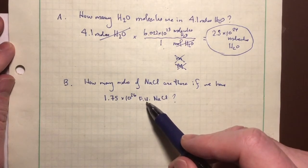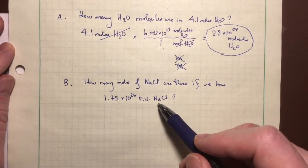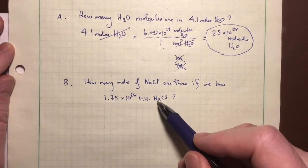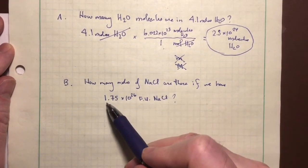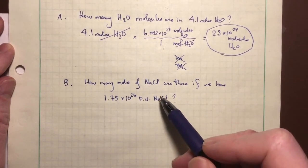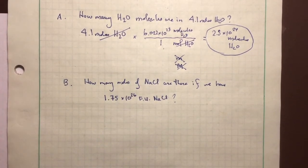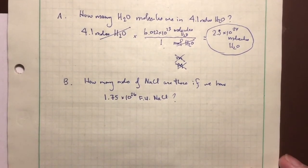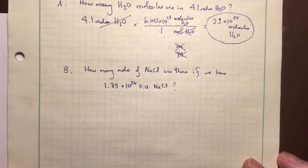1.75 times 10 to the 26th formula units of NaCl. What does formula unit mean again? Formula unit means that you have one unit of that formula. You have a sodium ion and you have a chloride ion, and so you have one unit of that formula. And I'm saying you have 1.75 times 10 to the 26th of those formula units. So how many moles of sodium chloride are there? Well, I'd like for you to pause the video and see if you can work that out, set up your math, make sure you're diligent with your dimensional analysis. And when you've finished and you have your correct number of sig figs and everything, then resume the video and compare your work with mine. Go ahead.